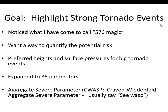What I did is expand it to 35 total parameters. Locally I call it CWAS, which stands for Craven-Wiedenfeld Aggregate Severe Parameter. I was trying to think — WAS would probably be a better description since Jerry did most of the work, but anyhow, that's another story.